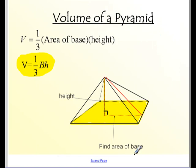And then the volume of a pyramid. This one's not so intuitive — it would take some calculus to show where the one-third comes from. The formula is one-third times the area of the base times the height. And for height, we're talking the actual straight up-and-down height, not the slant height. You should have those formulas — lateral area, total area, and volume — written down.